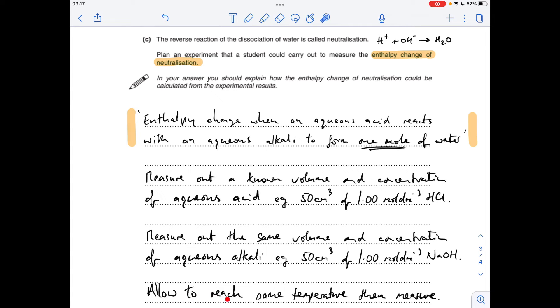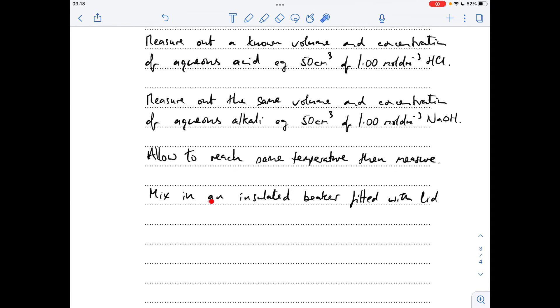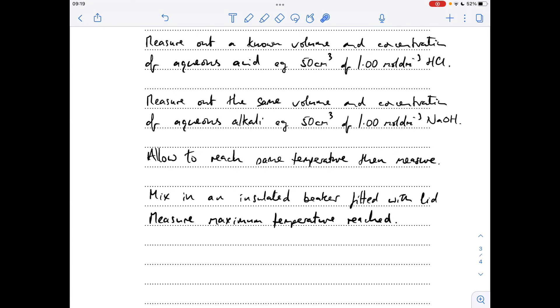So I'm sure you can picture them sitting in two separate beakers. What you do is allow some time for them to reach the same temperature. And then obviously you would measure the temperature of both. And that's going to give you your starting temperature for the experiment. So then you would mix them together in ideally an insulated beaker and you'd fit it with the lid. So we're minimising any heat loss here. You'd then give them some time and then measure the maximum temperature reached. So that would give you your final temperature.